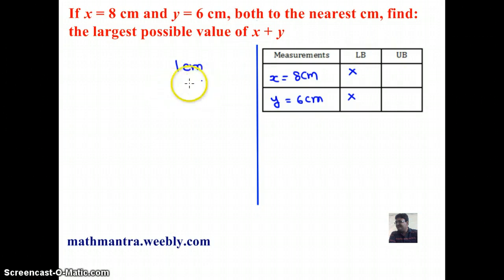In order to find the upper bound of x and y, I need to divide this 1 centimeters by 2, so I get 0.5 centimeters.